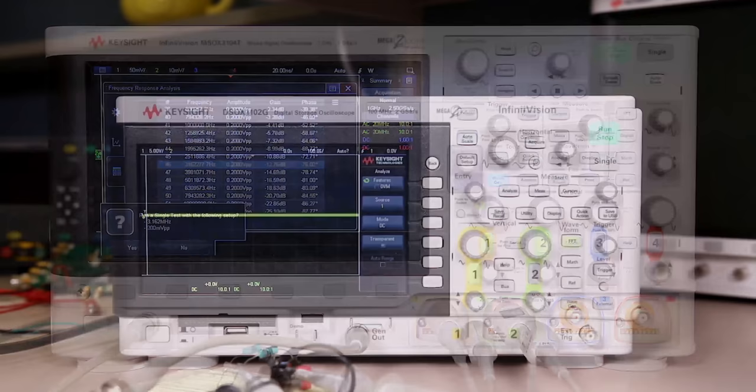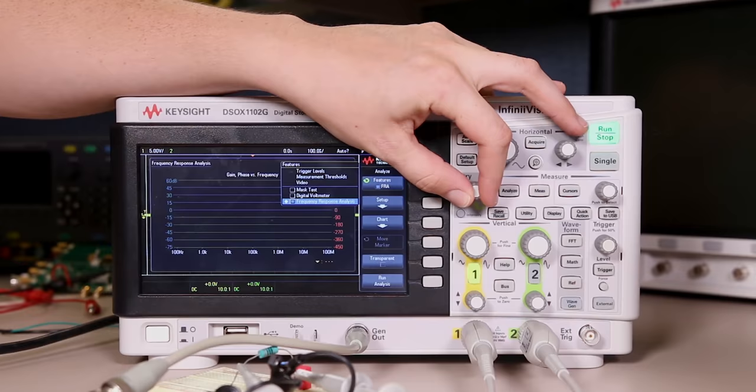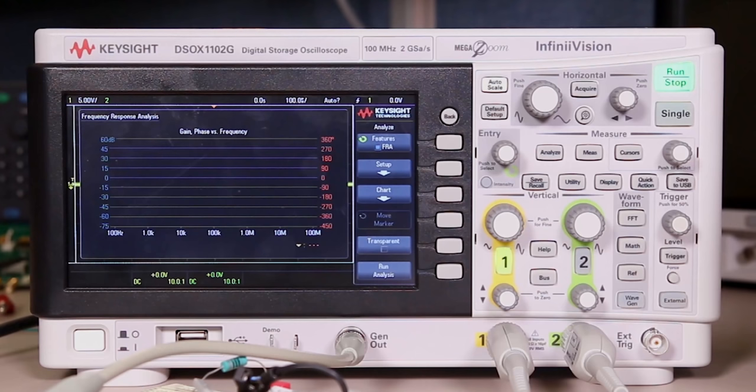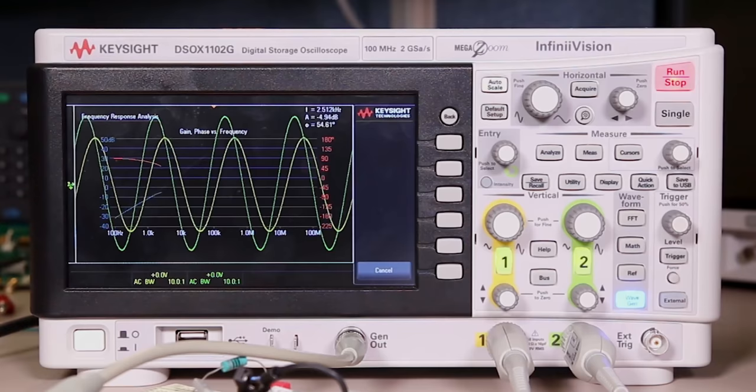The frequency response analysis application is also available on the low price 1000x series oscilloscope. So this is a lot of performance to get in this little scope. The features of the application are a little bit more limited. For example you can't set the custom amplitude profile but it gives you the gain and phase data in the form of a Bode plot on the screen so you're able to make these types of measurements on this class of an oscilloscope.